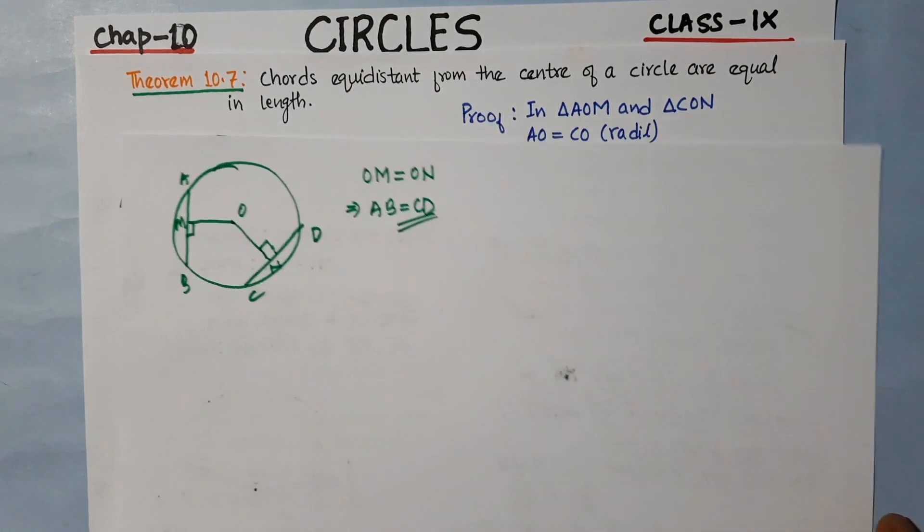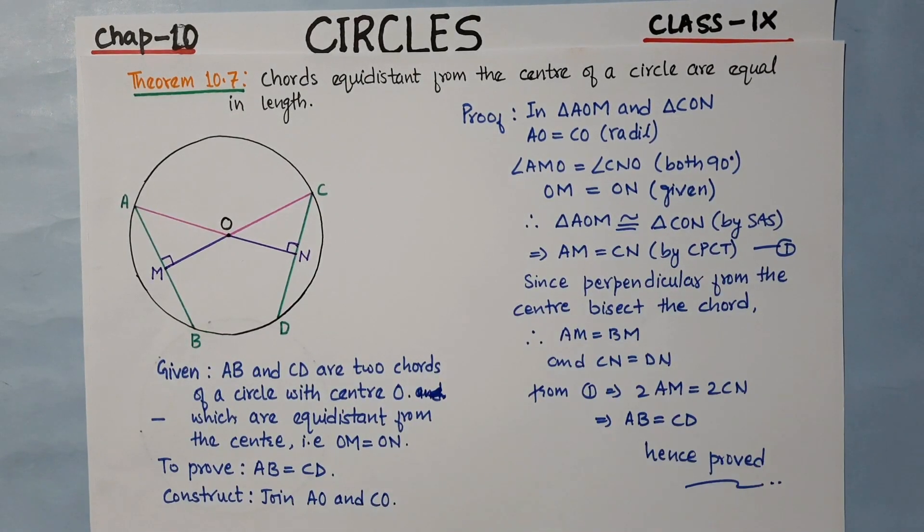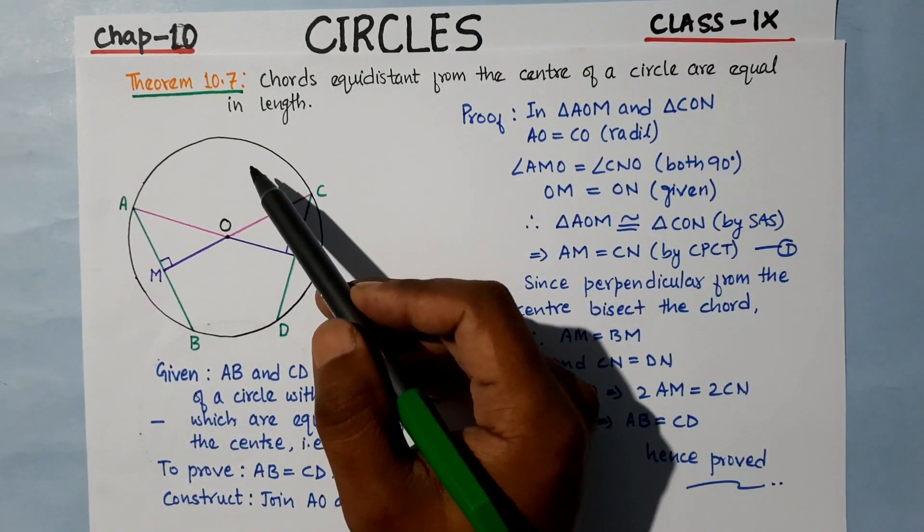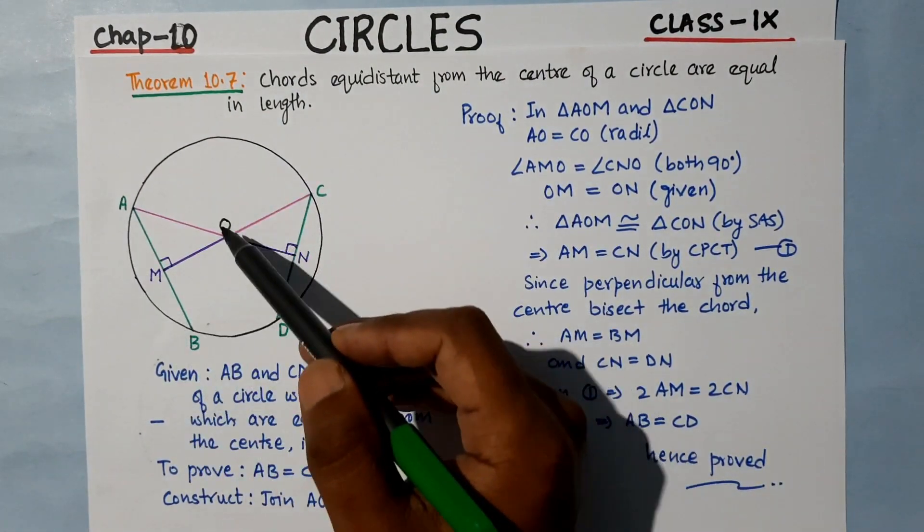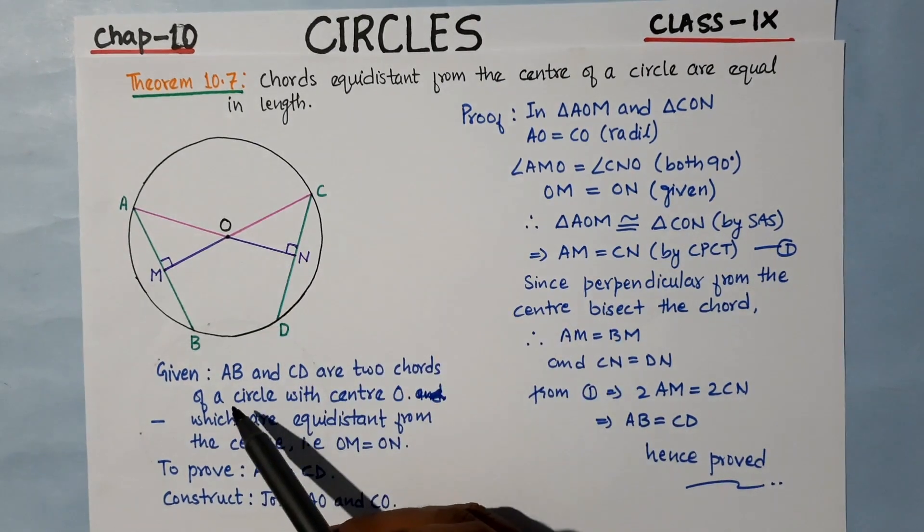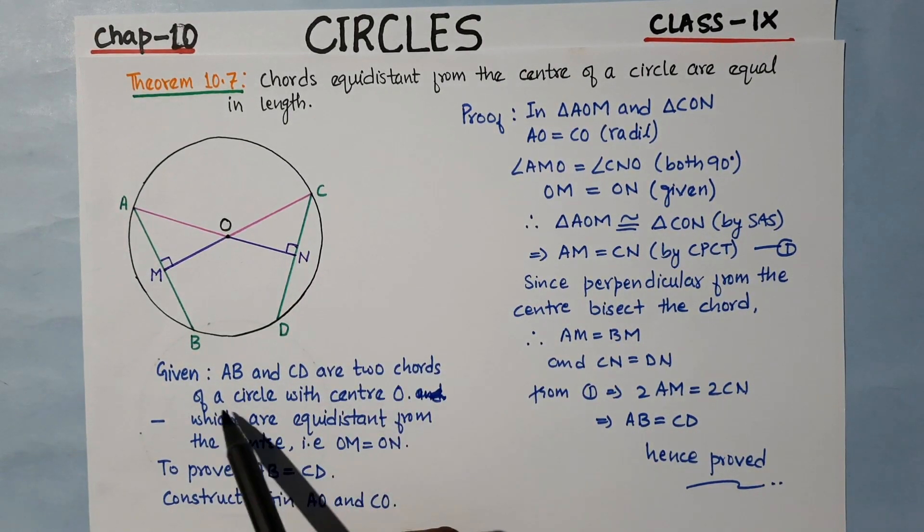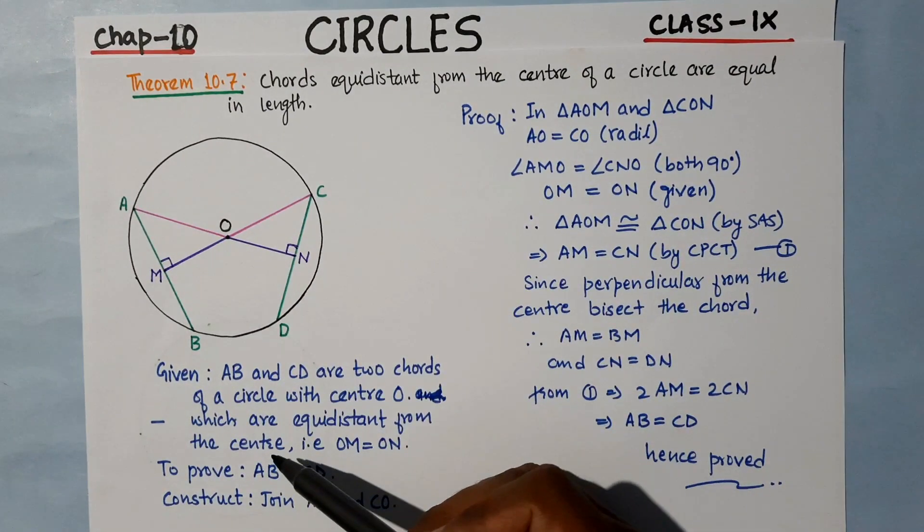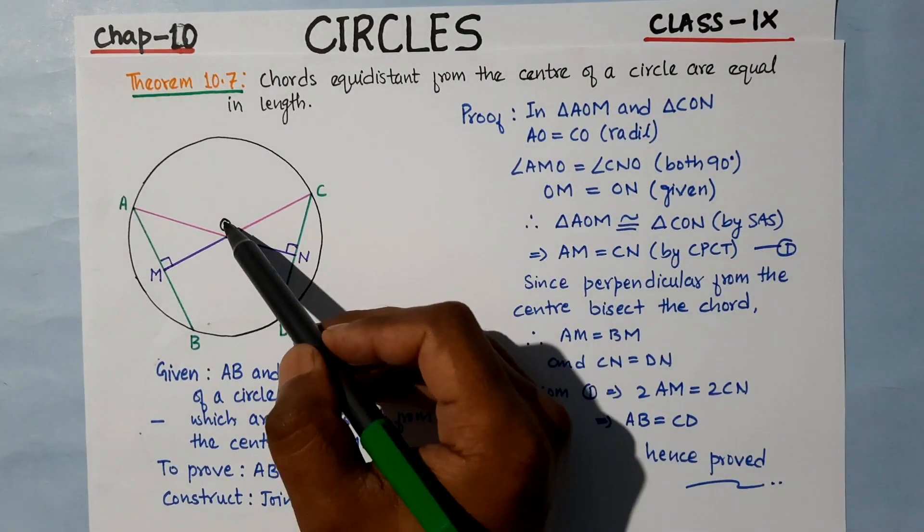So let's prove the theorem. First we draw a circle with center O. We are given AB and CD are two chords of a circle with center O.